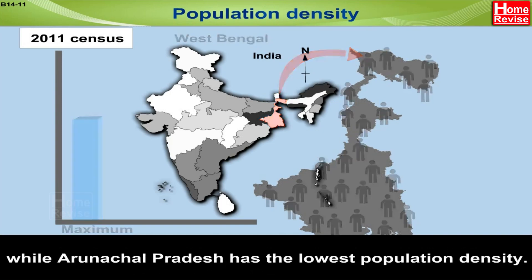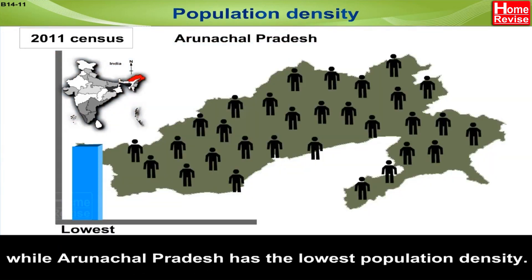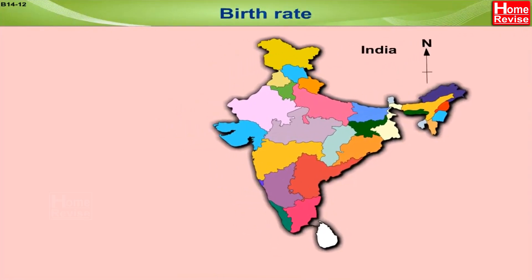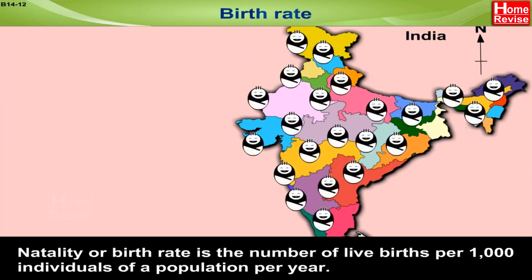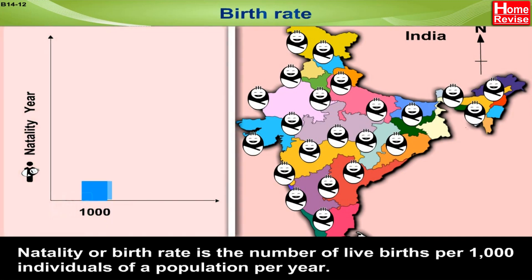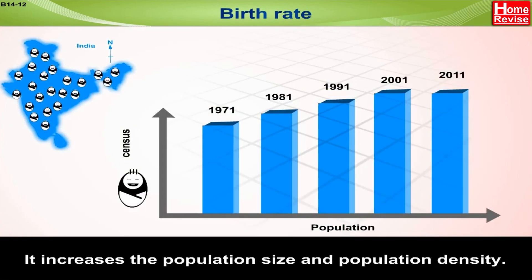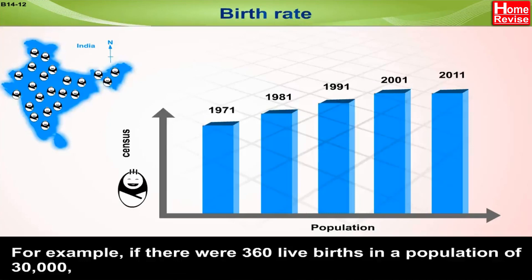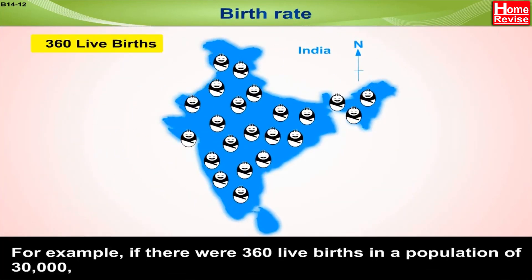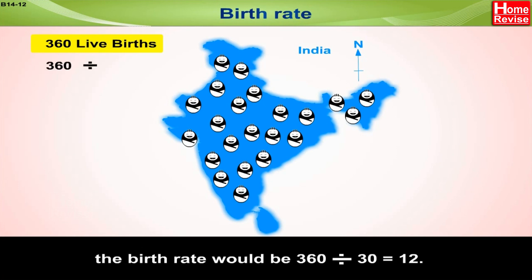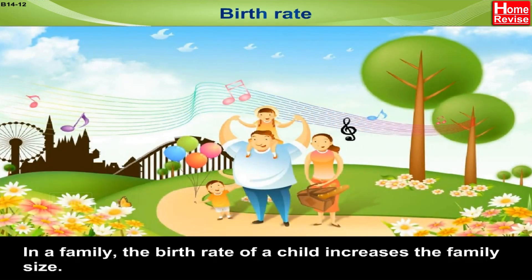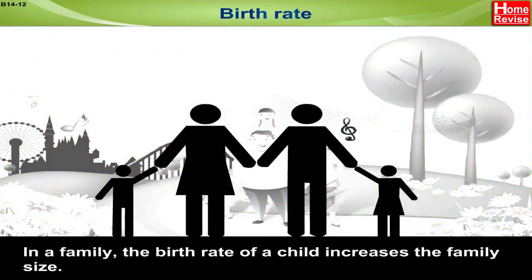Birth rate. Natality or birth rate is the number of live births per thousand individuals of a population per year. It increases the population size and population density. For example, if there are 360 live births in a population of 30,000, the birth rate would be 360 divided by 30, which equals 12. In a family, the birth rate of a child increases the family size.